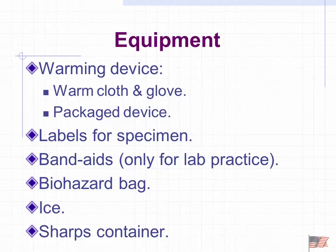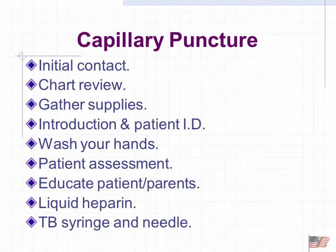The first thing we want to do is warm the site. We warm it to arterialize the blood — better blood flow from the heat means that when we do the puncture, the values will be closer to arterial values, which is what we're looking for. We also need labels, band-aids, a biohazard bag for transport, and a sharps container to dispose of the lancet.